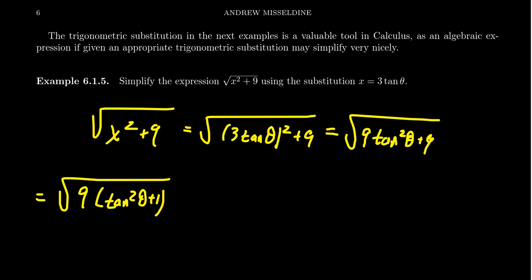And now, this is where the trigonometric identity comes into play. Recall that 1 plus tangent squared theta is equal to secant squared theta. This is a child of the mother Pythagorean identity. If we make this substitution, we could substitute tangent squared plus 1 with secant squared. And this gives us, then, the square root of 9 times secant squared theta.